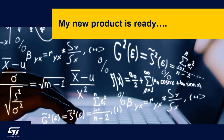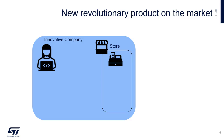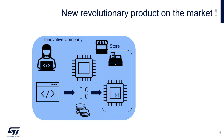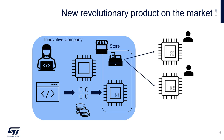Let's start with the example of a company which has developed an innovative product. This innovative company has developed for months a new product which embeds valuable data and algorithms. When this product has been tested and validated, production starts, and then the company begins to sell this product all over the world. And this product was a real success.